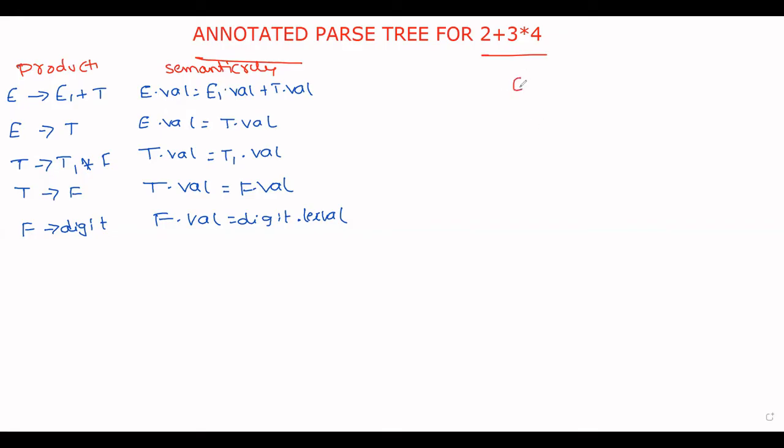Simply here I will construct E, obviously starting from the parse tree production. E tends to E plus T. Again expand E. So from this 2 plus 3 into 4, based on this I am evaluating the expression.